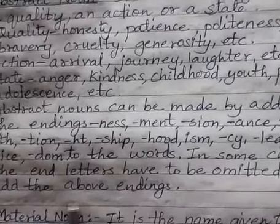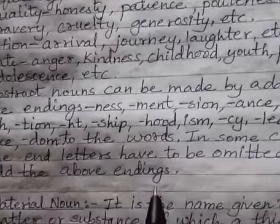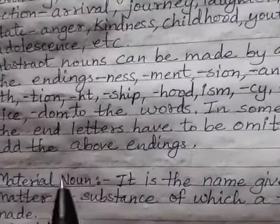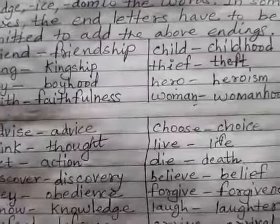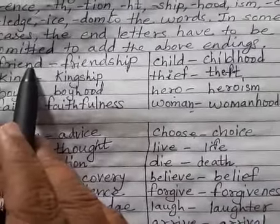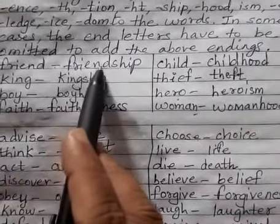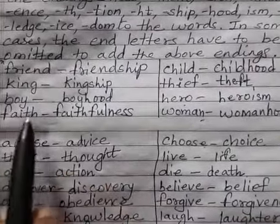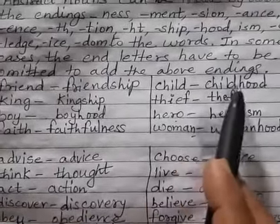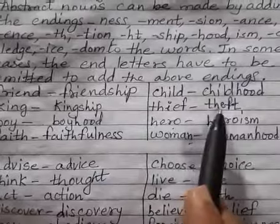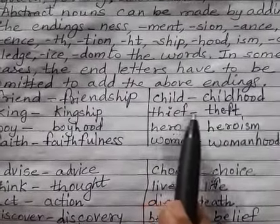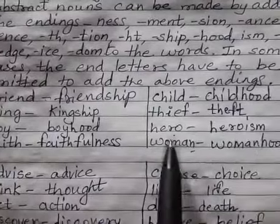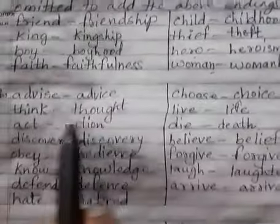Here are some common nouns and their abstract noun forms: friend → friendship, king → kingship, boy → boyhood, faith → faithfulness, child → childhood. For thief, we remove the last letter and add -t: thief → theft. For hero, we add -ism: hero → heroism. For woman: woman → womanhood.